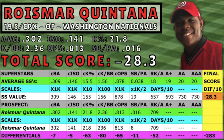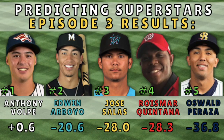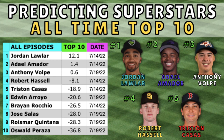His final rank came in at negative 28.3. In this episode, Anthony Volpe takes first place as the only player scoring above zero with a 0.6. Arroyo brought home the silver medal with a score of negative 20.6 ahead of Salas and Quintana, who both scored in the negative 28s. Oswald Peraza's early 2022 struggles left him with a negative 36.8 in this episode, but he's shown significant improvement in both ISO and batting average since the start of 2022. Anthony Volpe is our only new addition to the overall top five in this episode. His score on July 19th was good for third place behind Adiel Amador's score of 1.4 and Jordan Lawler's score of 12.1 back on July 14th.